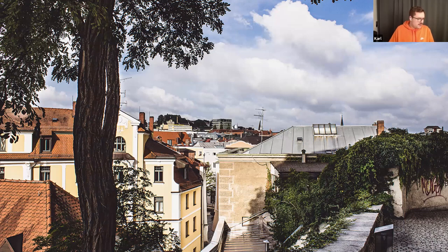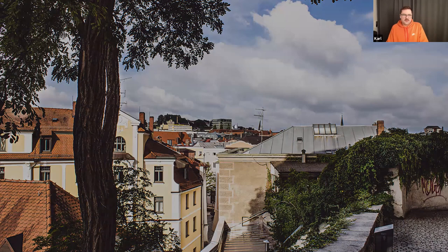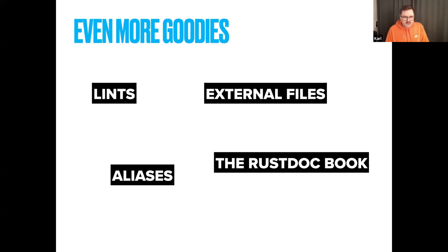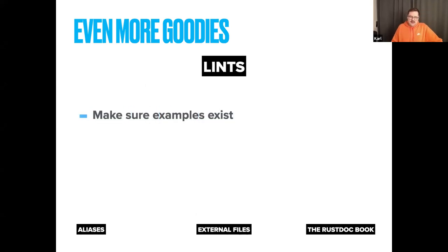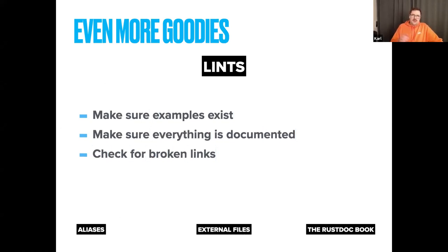Some more goodies: lints, which I slightly touched on already; external files; aliases, which are really cool; and the rustdoc book. Lints can ensure examples exist or that everything is documented. You can also check for broken internal links — so if a developer refactors something you link to, the build process notifies you the link is broken, ensuring your documentation is up to date everywhere.